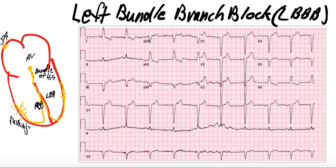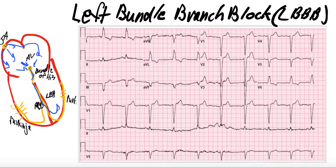Usually your conduction goes: you get your SA node, and we come all through the atria and go down into your AV node. There's a little slowing here, we go down the bundle of His, and then we go into the left and right bundle branches. In the left bundle branch block, you have a block in the left bundle. That means the depolarization is actually going to preferentially go to the right, and then you're going to depolarize the left side through the septum, and that's how the left ventricle depolarizes.